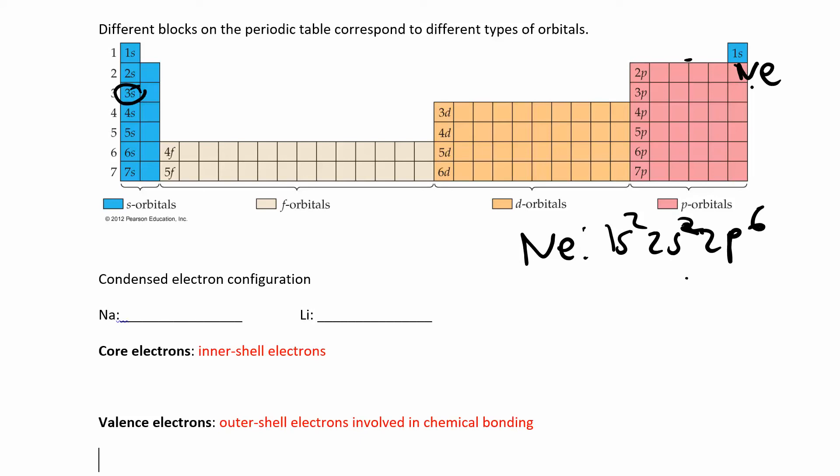Those are all core electrons. Those are the inner electrons. When everything is full, those are core electrons. The valence electrons are the outermost electrons here. Actually, the outermost s and p electrons are your valence electrons. So neon has, the outermost is that second energy level. So I have 2 plus 6, I have 8 valence electrons in neon.